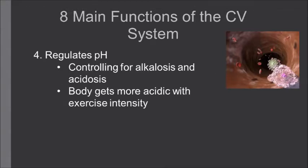The fourth function of the cardiovascular system is the regulation of pH — essentially controlling for alkalosis and acidosis. As we exercise, the body becomes more acidic, meaning there are a greater number of hydrogen ions. The cardiovascular system is able to buffer this, which is why it plays an important role in pH regulation.